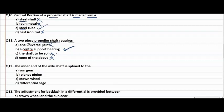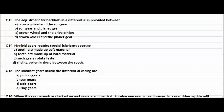The inner end of the axle shaft is splined to the sun gear, planet gear, crown wheel, differential cage. Crown wheel not the answer, planet pinion not the answer, so right answer is sun gear.